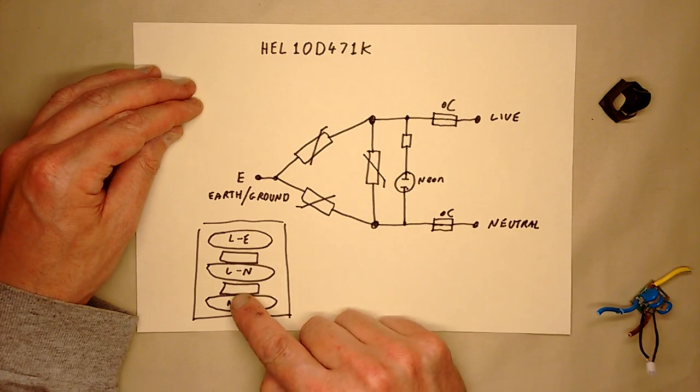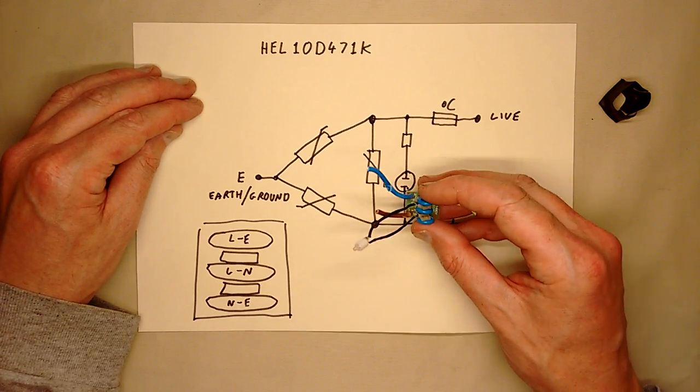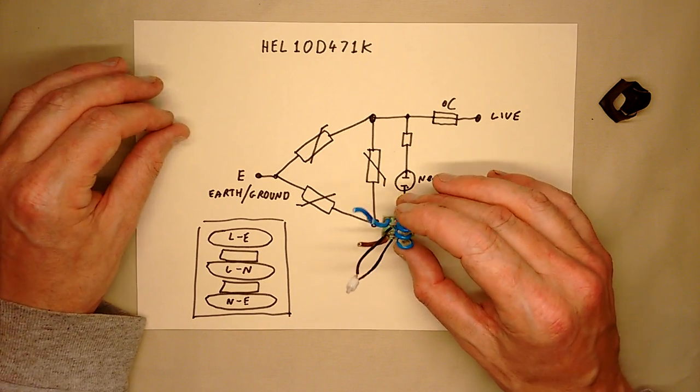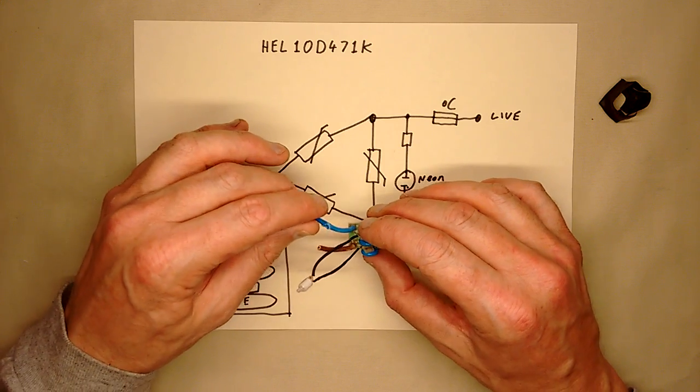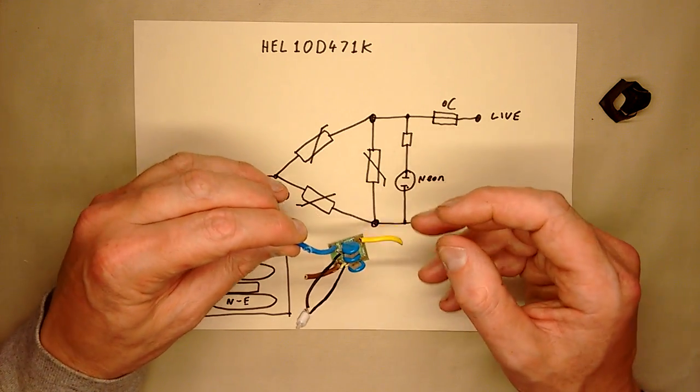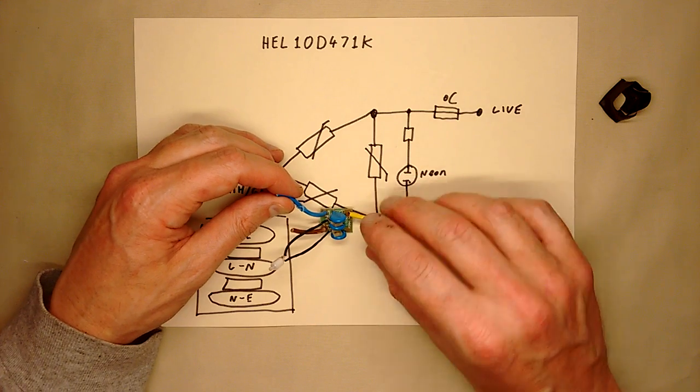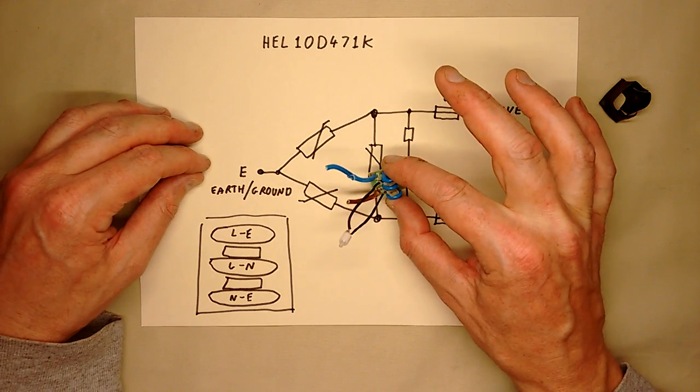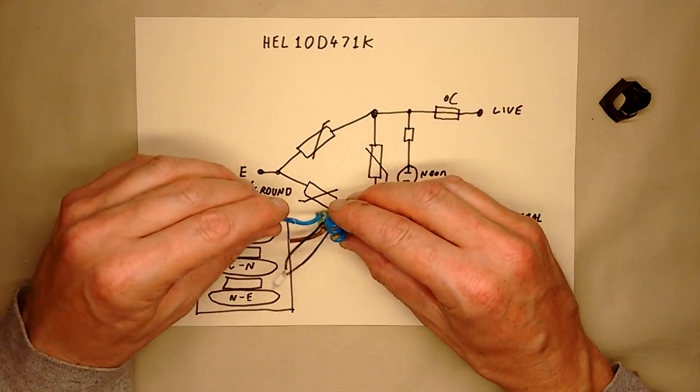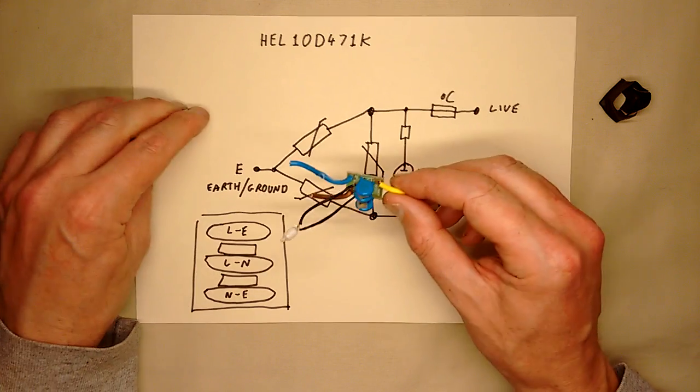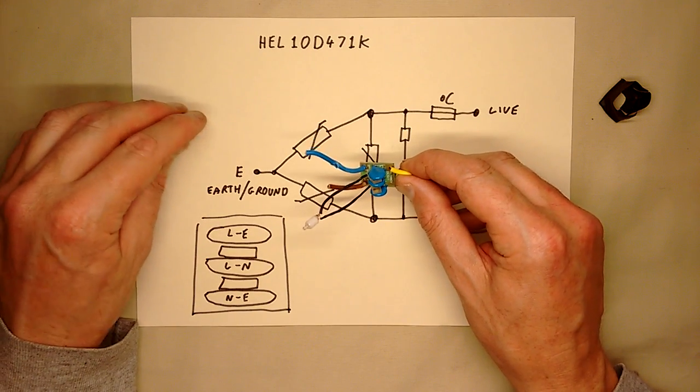The metal oxide varistors are smaller than the ones in the last unit, which means they've got a lower ability to absorb a significant number of surges. This would probably last less time than the other one that didn't have the thermal protection, but this one's less likely to set your house on fire afterwards.